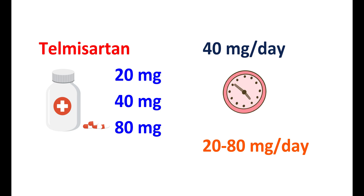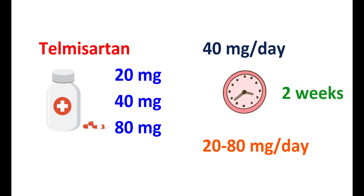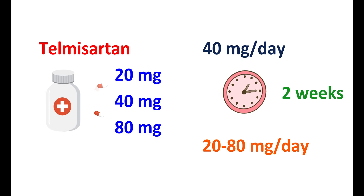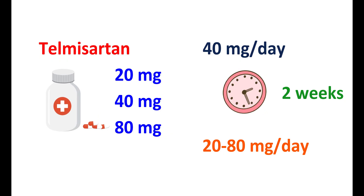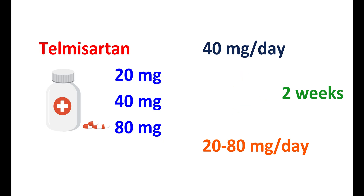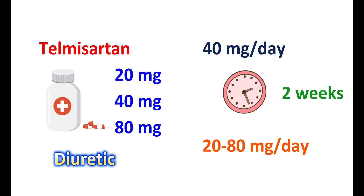The antihypertensive effect of this medication cannot be observed immediately. A stable reduction in blood pressure can be observed within two weeks of treatment, and after four weeks the maximum reduction can be observed. The dose can also be modified — in people with volume depletion, a low dose of 20 mg may be used, with a maximum dose of 80 mg per day. If more reduction in blood pressure is required, a diuretic such as hydrochlorothiazide or chlorthalidone can be combined with telmisartan.